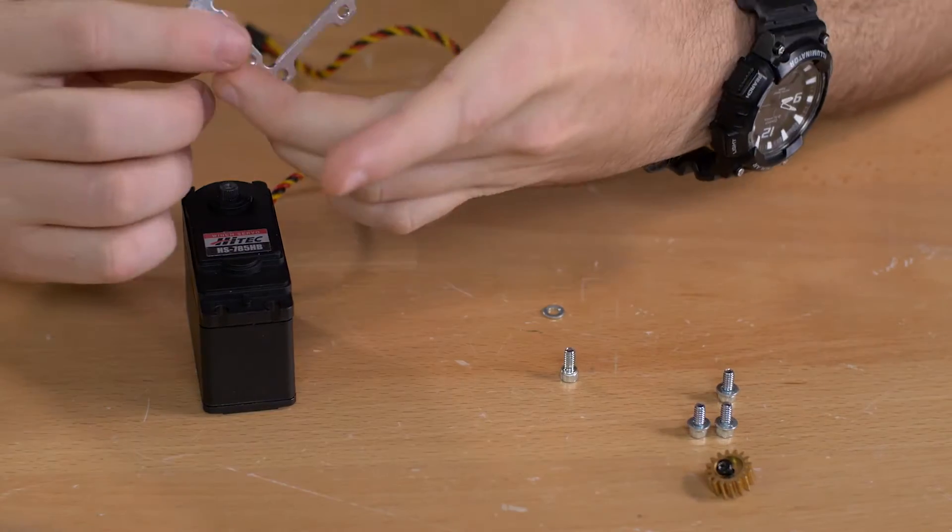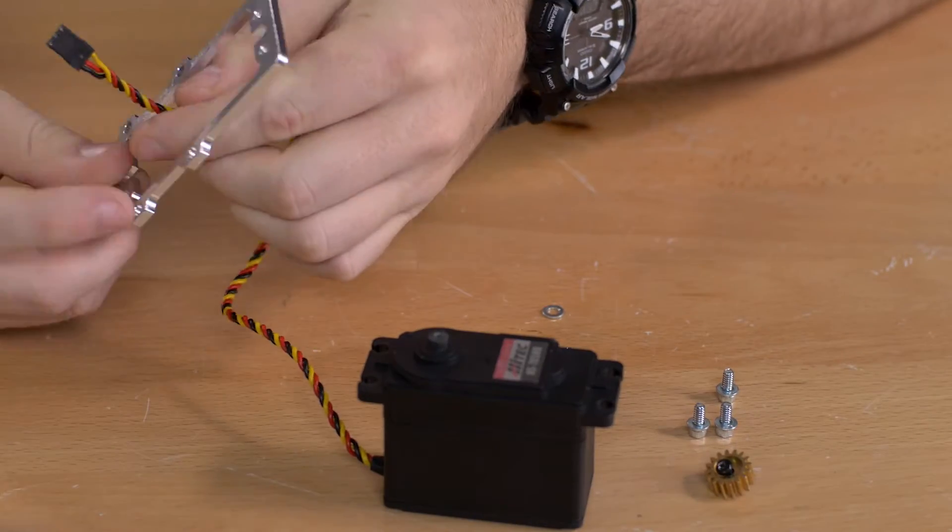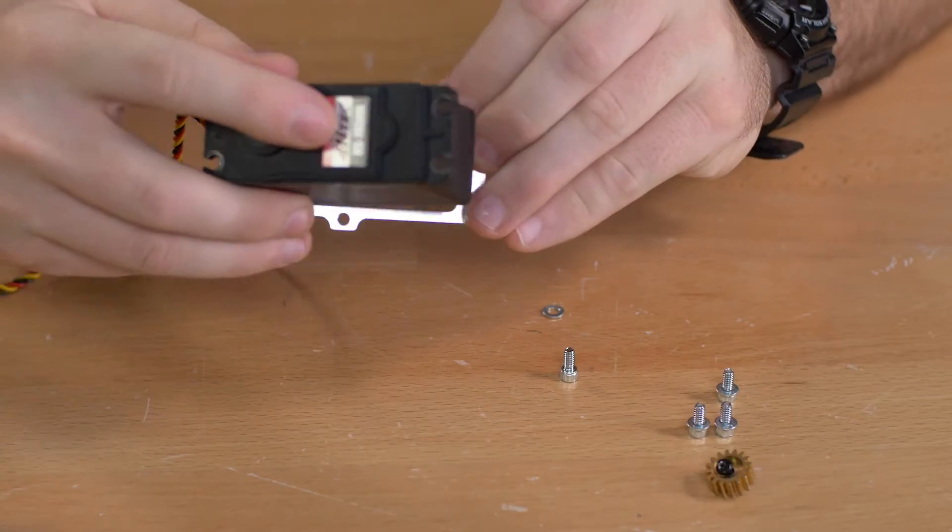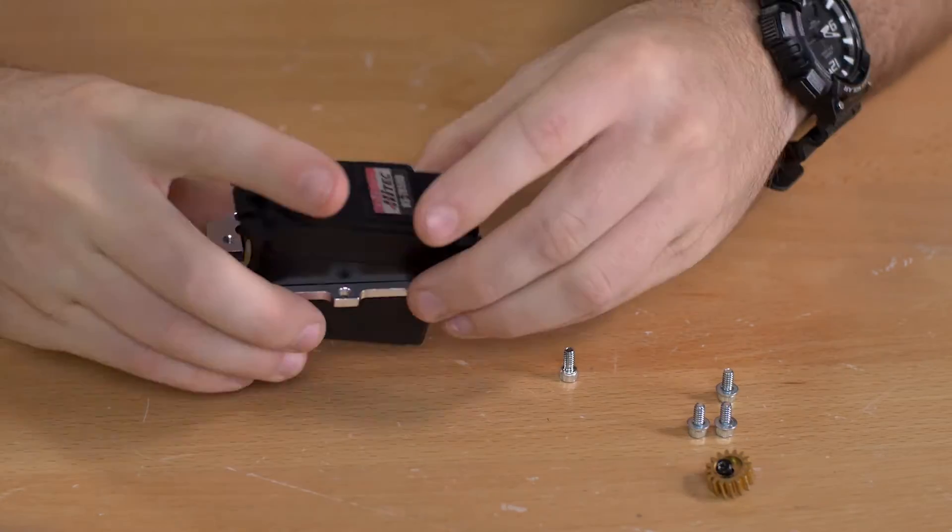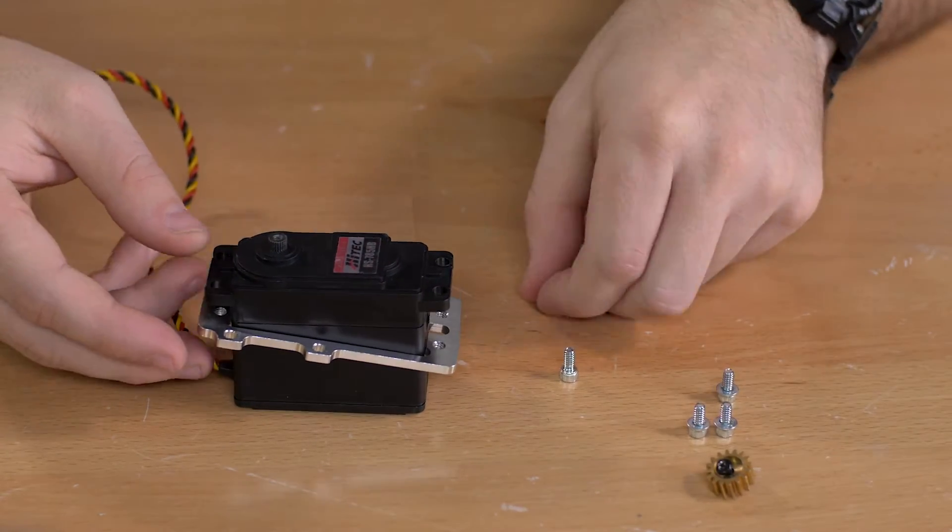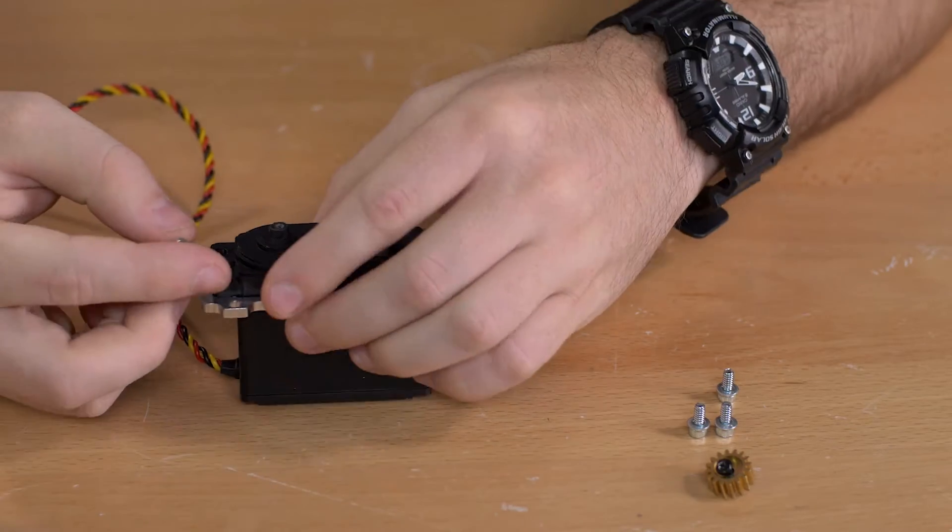For the first step we're going to attach the servo plate to the top of the servo. To do that we will slide the servo plate through the servo wire so that it comes in through the bottom of the servo, and it'll go upright like that. Then we're going to use the 516 inch socket head screws and number 6 washers to fasten that together.